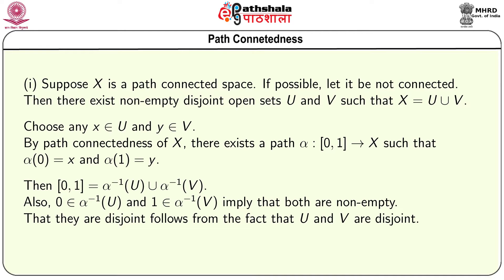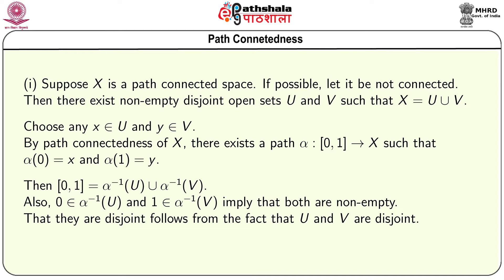Alpha⁻¹(U) is non-empty because 0 is in alpha⁻¹(U), and alpha⁻¹(V) is also non-empty because 1 is in alpha⁻¹(V). Since U and V are disjoint, alpha⁻¹(U) ∩ alpha⁻¹(V) = alpha⁻¹(U ∩ V) = empty. So alpha⁻¹(U) and alpha⁻¹(V) give a disconnection of [0,1]. But in the real line, a set is connected if and only if it is an interval, so [0,1] cannot be disconnected — thereby proving that X must be connected.